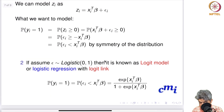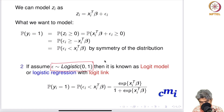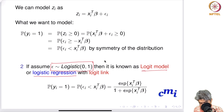On the other hand, instead of assuming εi ~ Normal(0,1), if you assume εi follows a Logistic(0,1) distribution, then it is known as the logit model, or logistic regression with logit link.